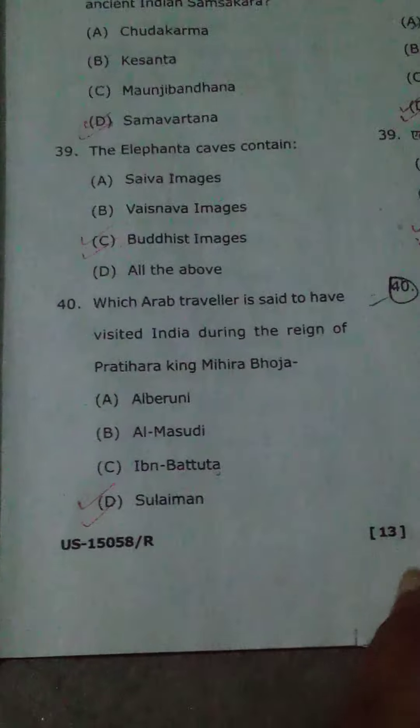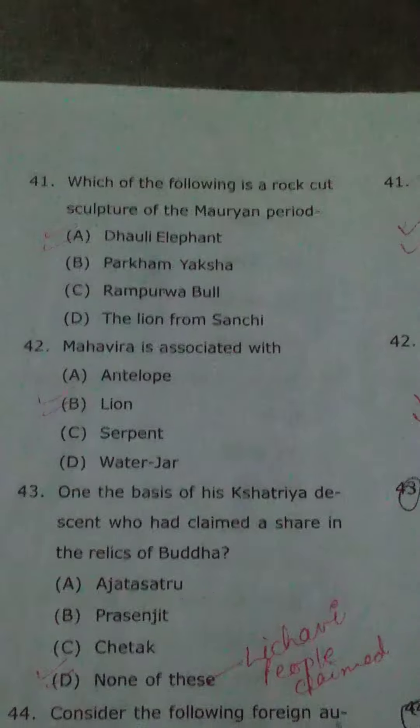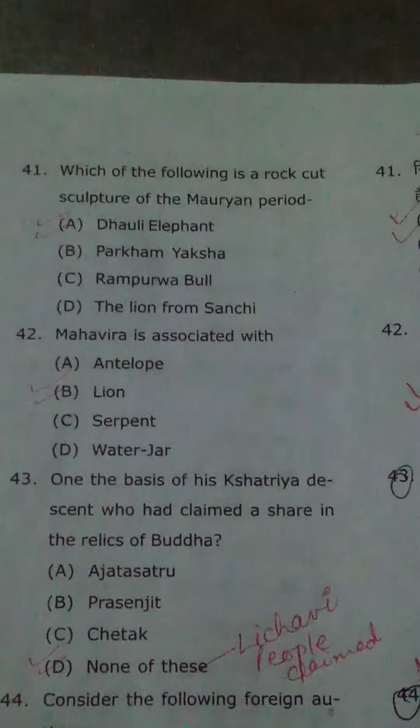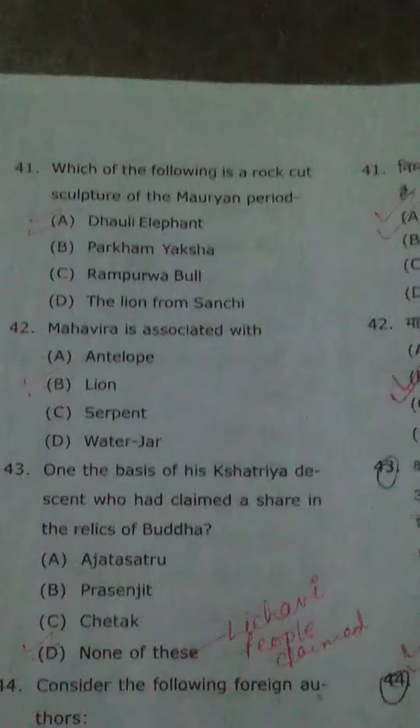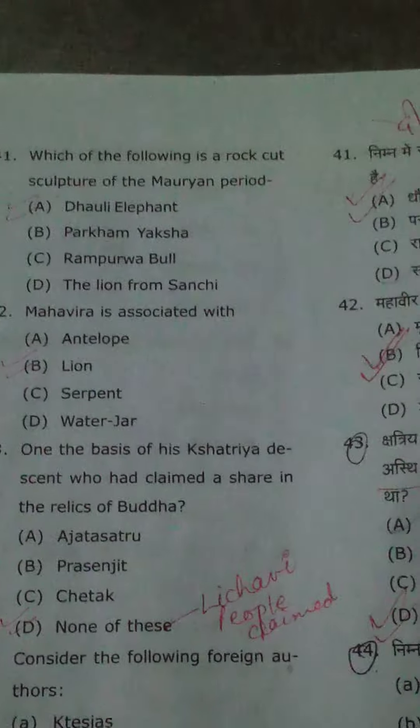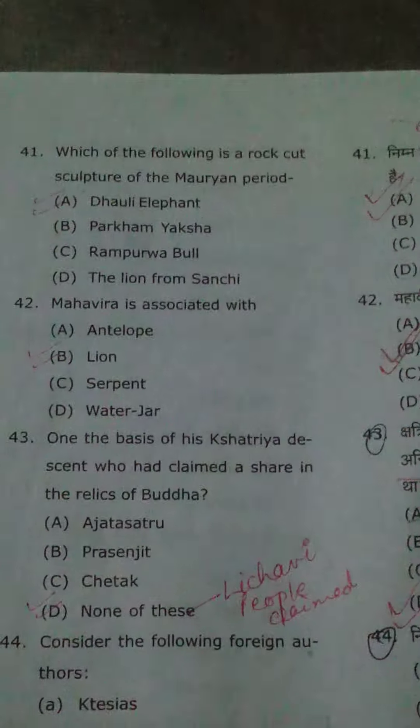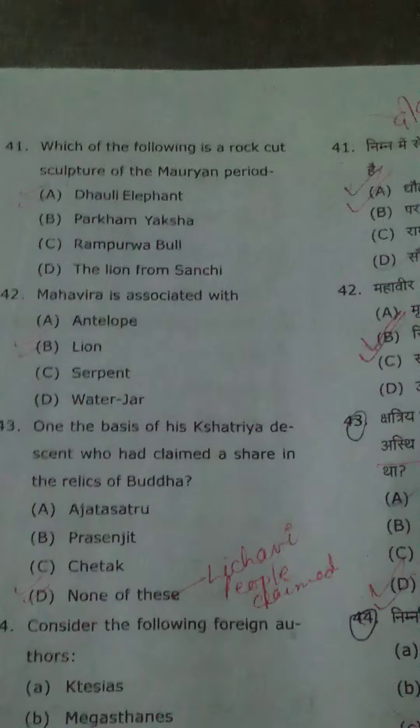This is a very important question — the 40th question. Which of the following is a rock-cut sculpture of the Mauryan period? Dhauli Elephant.